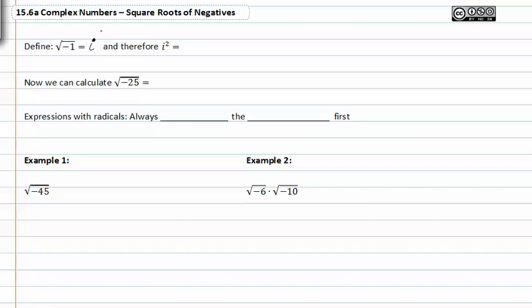Therefore, if we have i squared, it would be the square root of negative one times the square root of negative one. And this would give us negative one, so i squared is negative one.